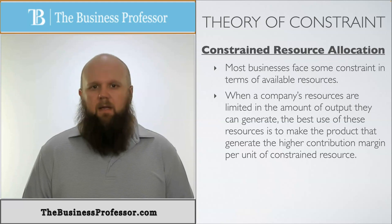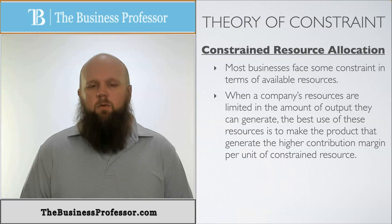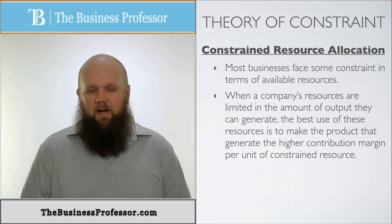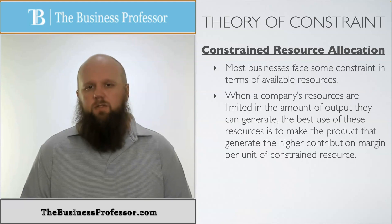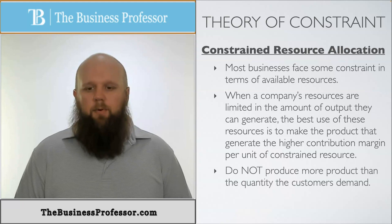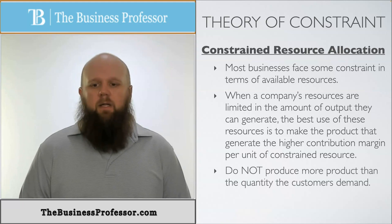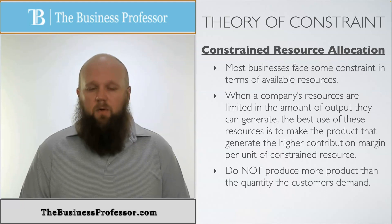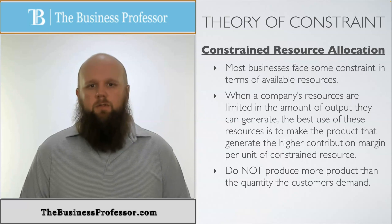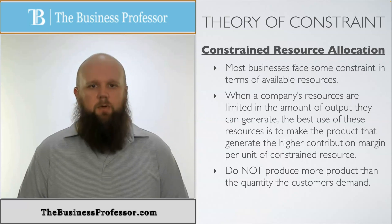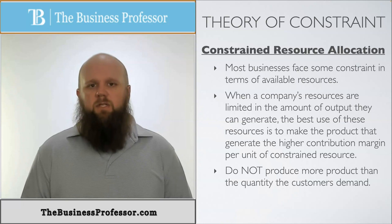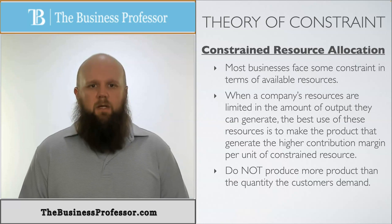I know that's a long thing, but we'll get to that in a minute with the example. But that's what we're trying to find. That's how we define what we're going to do first, second, third, and so on. Do not produce more products than the quantity the customer demands. That is a very important concept. We're not trying to overproduce the one that creates the highest contribution margin per unit of constrained resource. We're just trying to fulfill the orders of the customer.